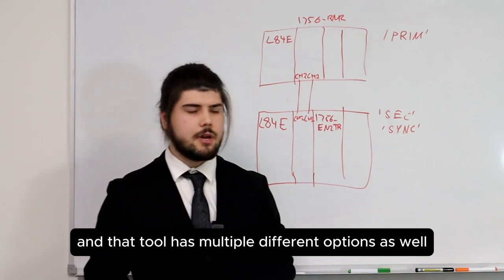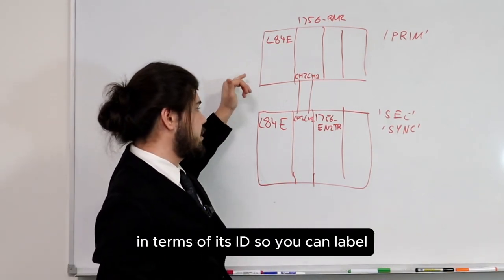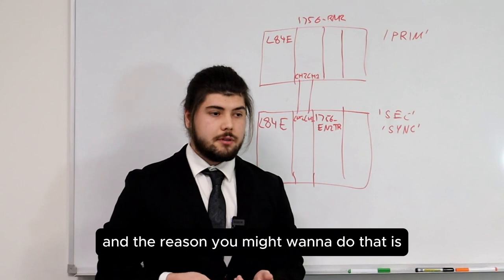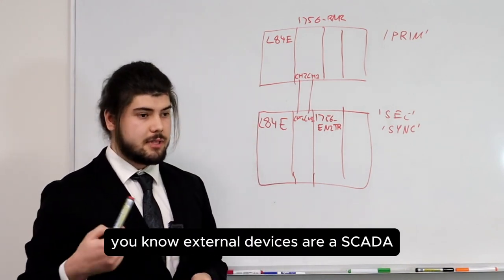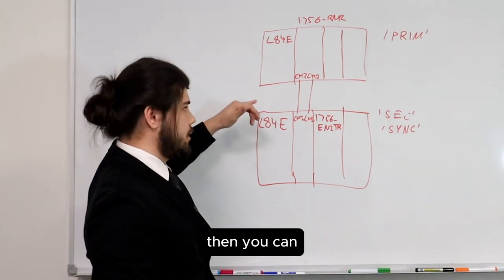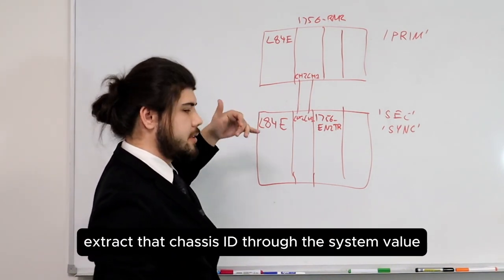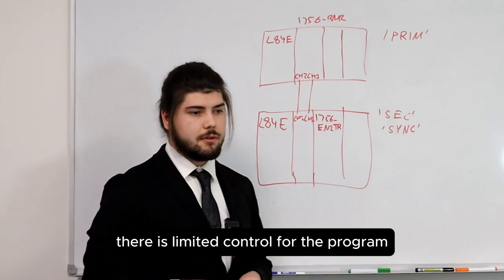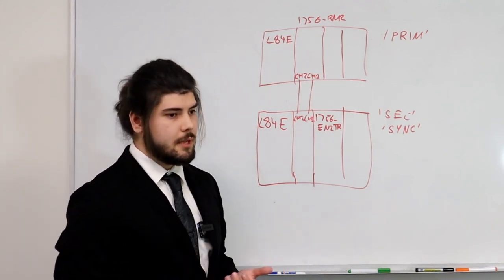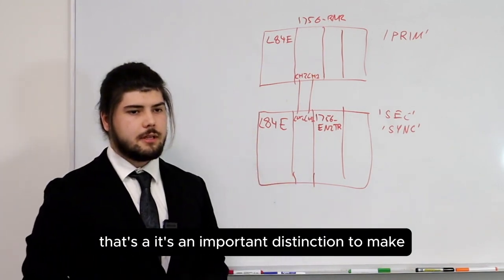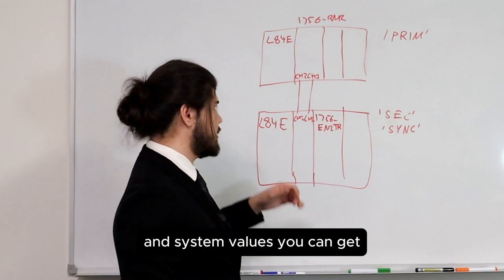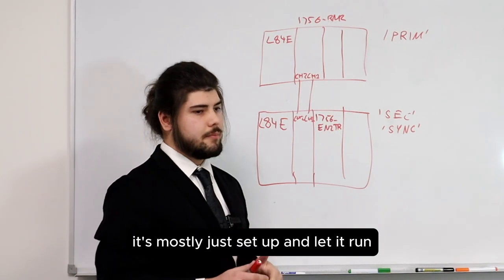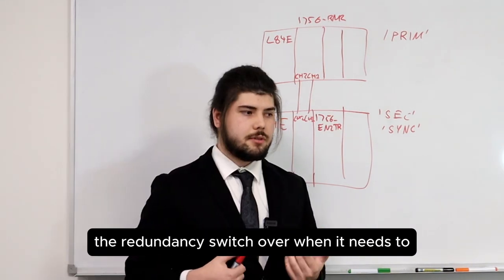In the RMCT tool there are multiple options. You can set a chassis ID description — labeling the primary as chassis A and the secondary as chassis B. If you're reporting to external devices or a SCADA to describe which chassis is in control, you can extract that chassis ID through the system value. You can also configure whether the program can actually control the PLCs. There is limited program control — mostly read values and system values — but through the program you can initiate a switchover. Mostly it's set up and let it run, and it will automatically handle the redundancy switchover when needed.